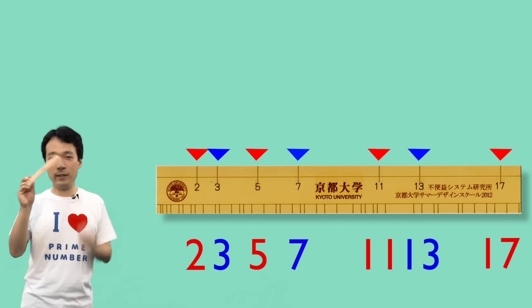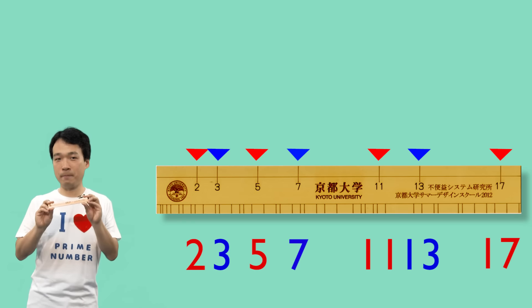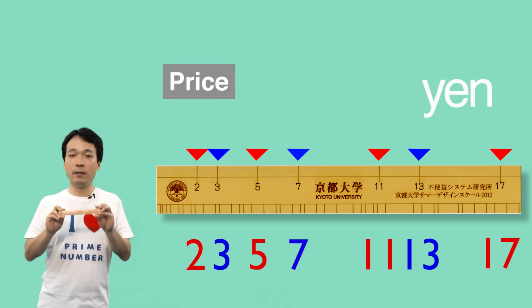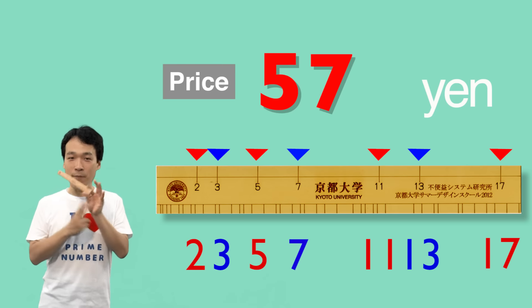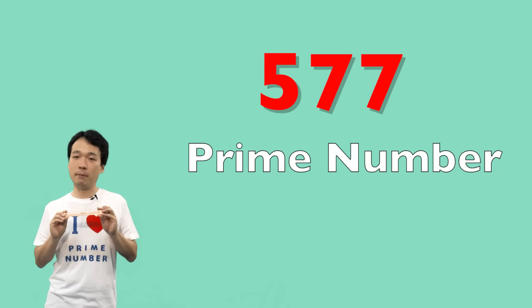By the way, if you want this item, you can buy one in a store at Kyoto University. The price is 577 yen. 577 is a prime number, of course.